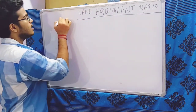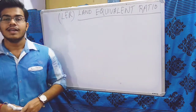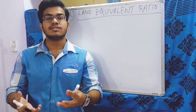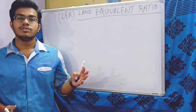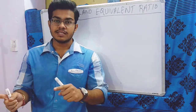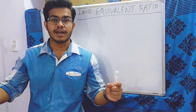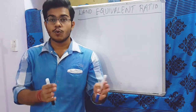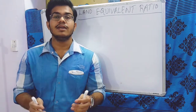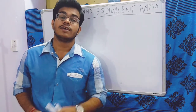So we can call it LER. LER is generally used to measure the agronomic efficiency of any crop. We use LER to compare the yields, the production and the productivity between two cropping systems — when a crop is grown in intercropping and when a crop is grown in another system like mono cropping or mixed cropping. This is mainly to find out the efficiency of the intercropping system.